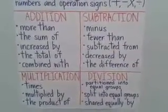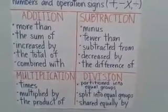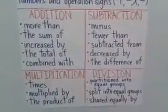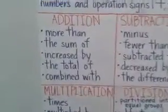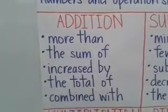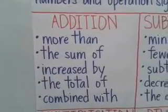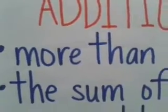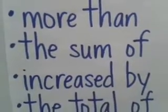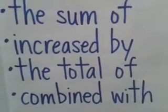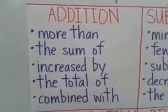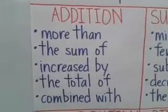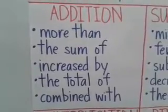We also see keywords in this chart for each of the operations. If you see any of these words, they signify — they represent — the different operations. Let's start with addition. Whenever you see these keywords, they probably mean you're gonna have to add. The keywords for addition are: more than, the sum of, increased by, the total of, combined with.